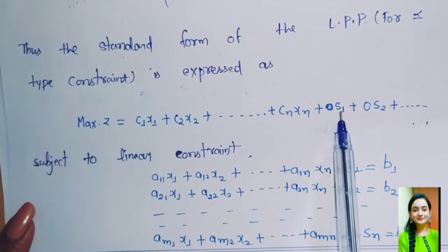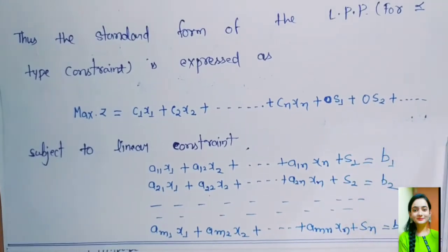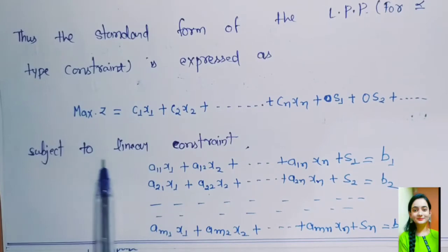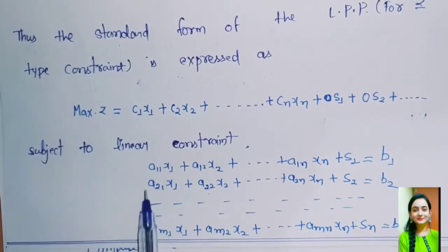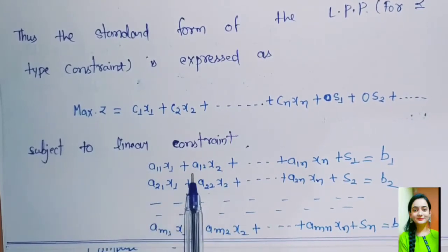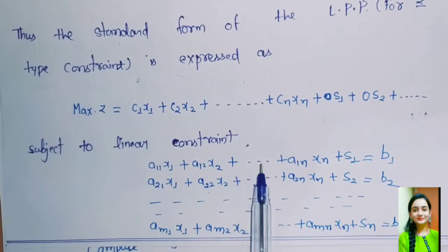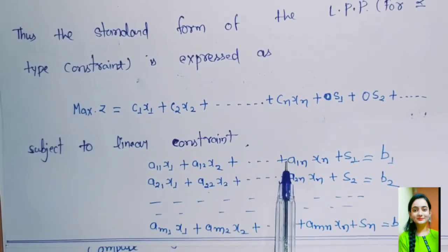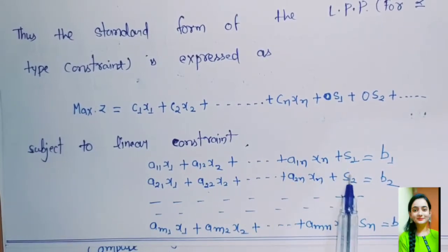And we have subject to linear constraints which is a11x1 + a12x2 + ... + a1nxn plus the slack variable s1 = b1.